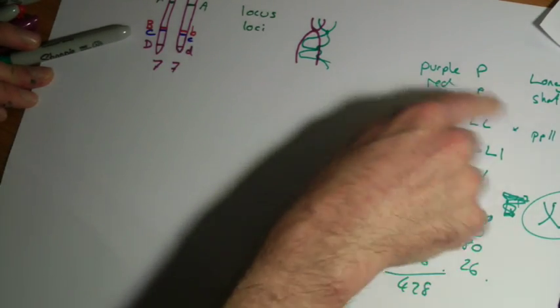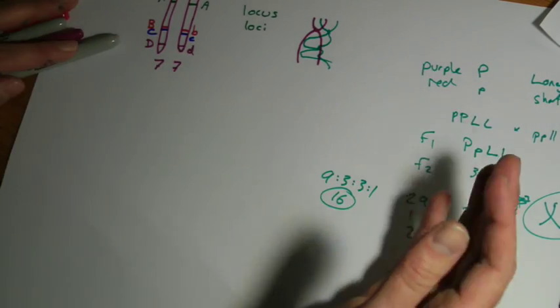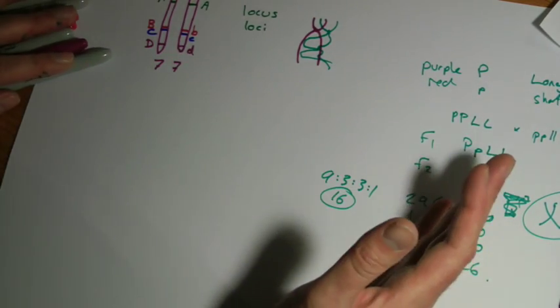Some genes could have been inherited together. These Punnett square things and the dihybrid crosses, we start off assuming that there's no linkage, but that's not necessarily always the case.